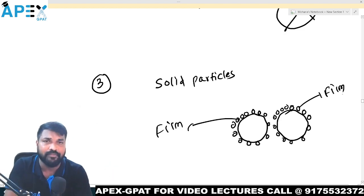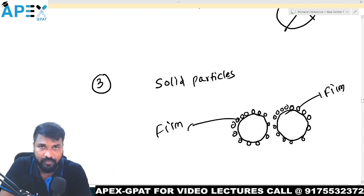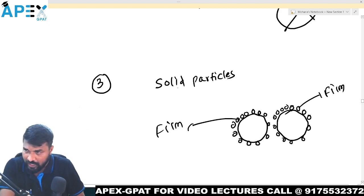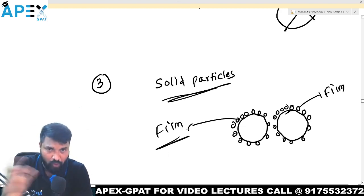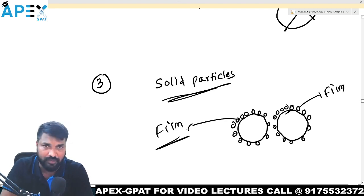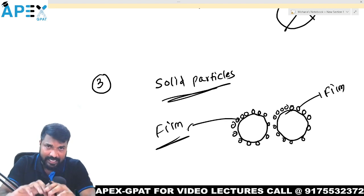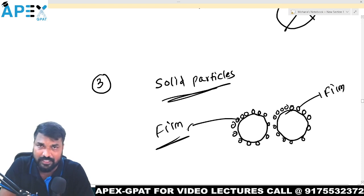Due to this film, the globules don't fuse together. When they don't fuse, there is no coalescence. The solid particles make a film around the oil globule, so there is no fusion, no bigger globule, and the system becomes stable.